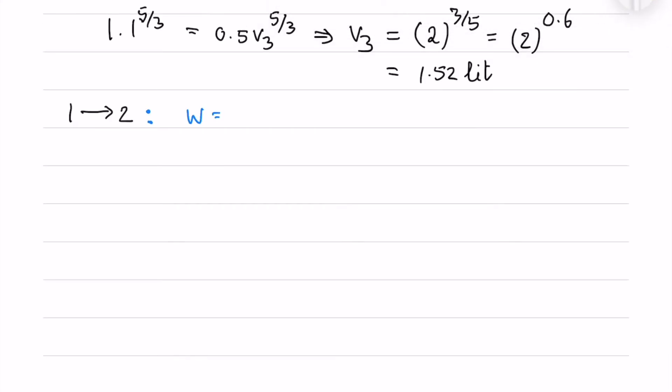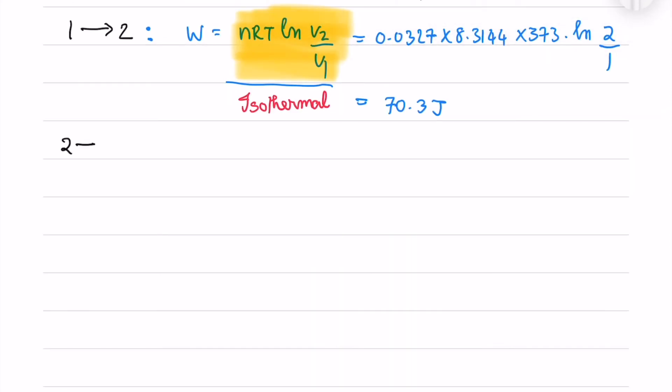Now we will find the work done for isothermal expansion which is given by nRT ln V2 by V1. So I will get 70.3 joules.